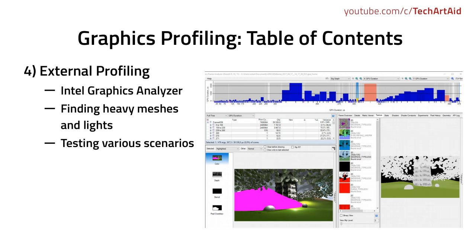The final part 4 will explain external profiling. I will use a tool from Intel that allows you to capture a single frame from within the game and perform very detailed profiling of that particular frame, down to the cost of a single light even if it is not shadowed. And the heaviness of particular meshes, which you can find by name or just visually. We will test various scenarios — for example, how our game performs when we disable all textures — in this way we will be able to find the bottlenecks very precisely.